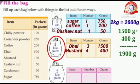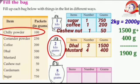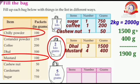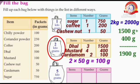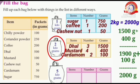Which items can we take to fill the remaining 100 grams? We can take one packet of chili powder, or one packet of mustard, or two packets of cashew nut, or two packets of cardamom, or one packet of cashew nut and one packet of cardamom. Here we take two packets of cardamom. One packet of cardamom is 50 grams, so two packets equal 100 grams. Total: 1900 grams plus 100 grams equals 2000 grams.